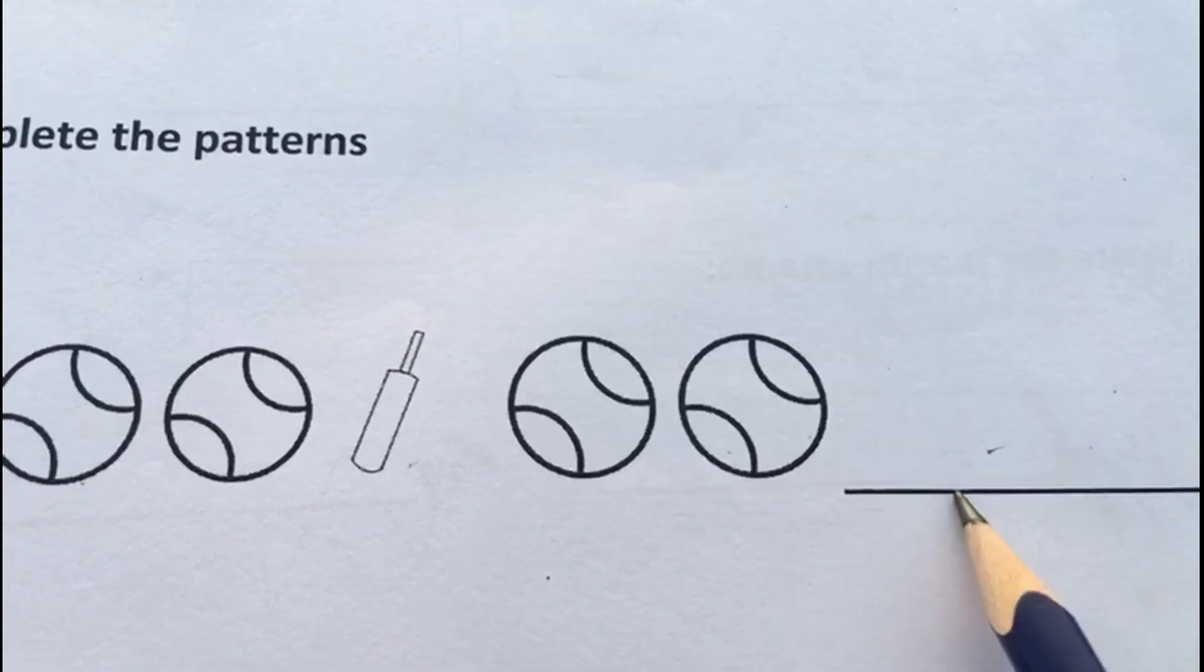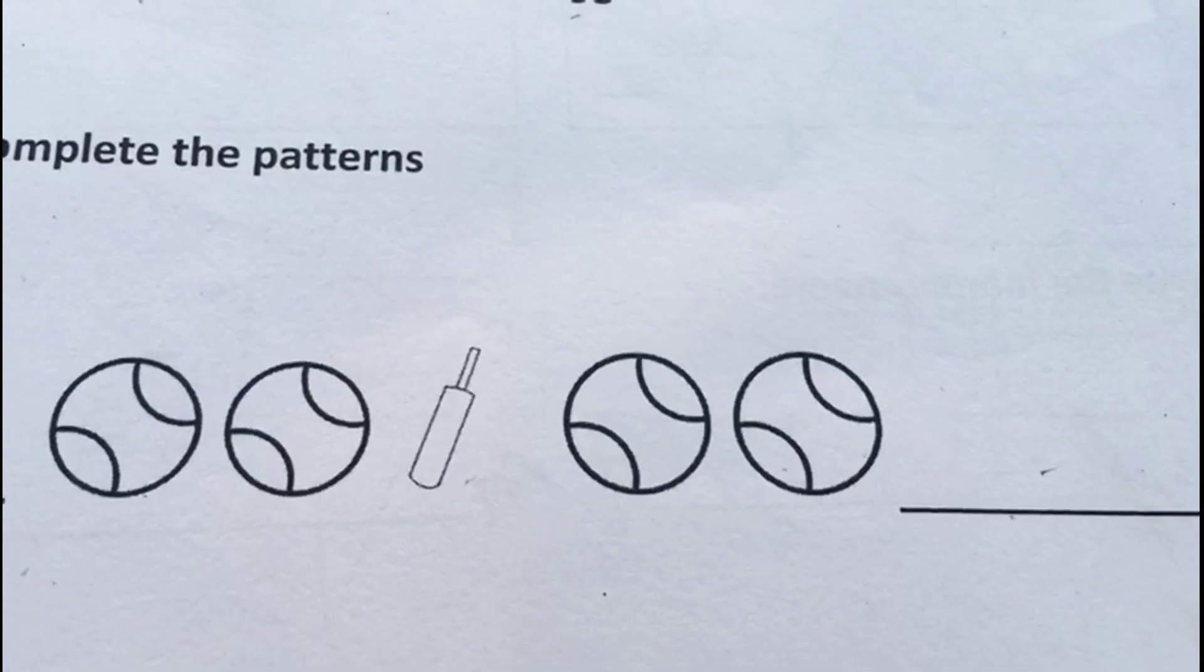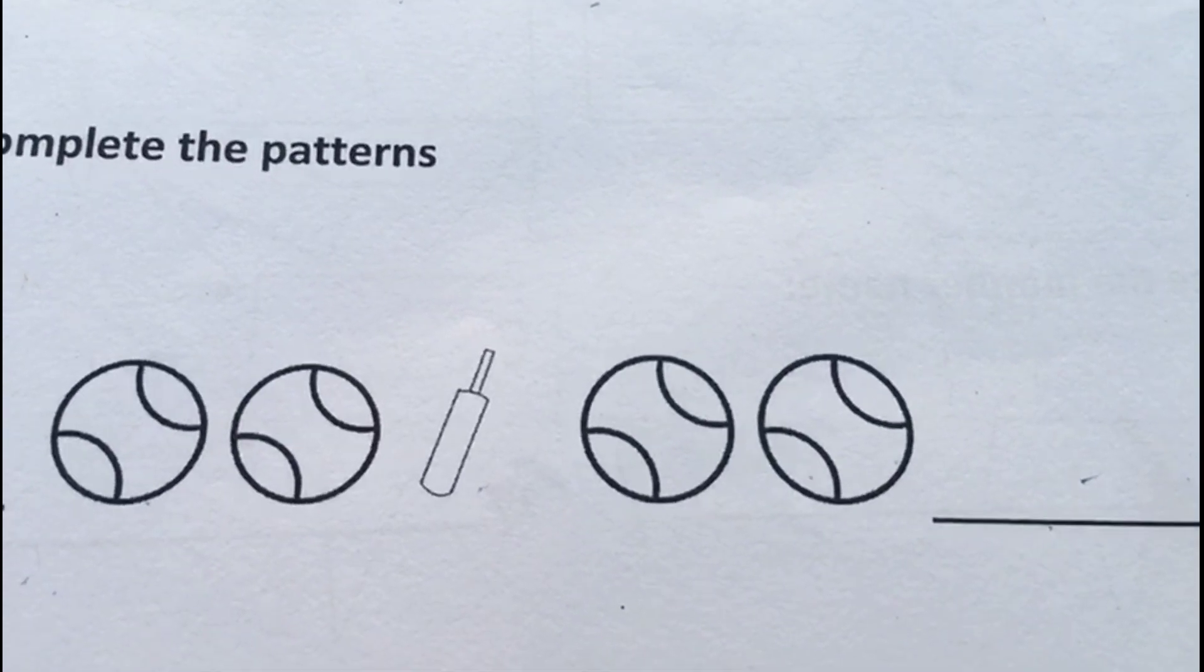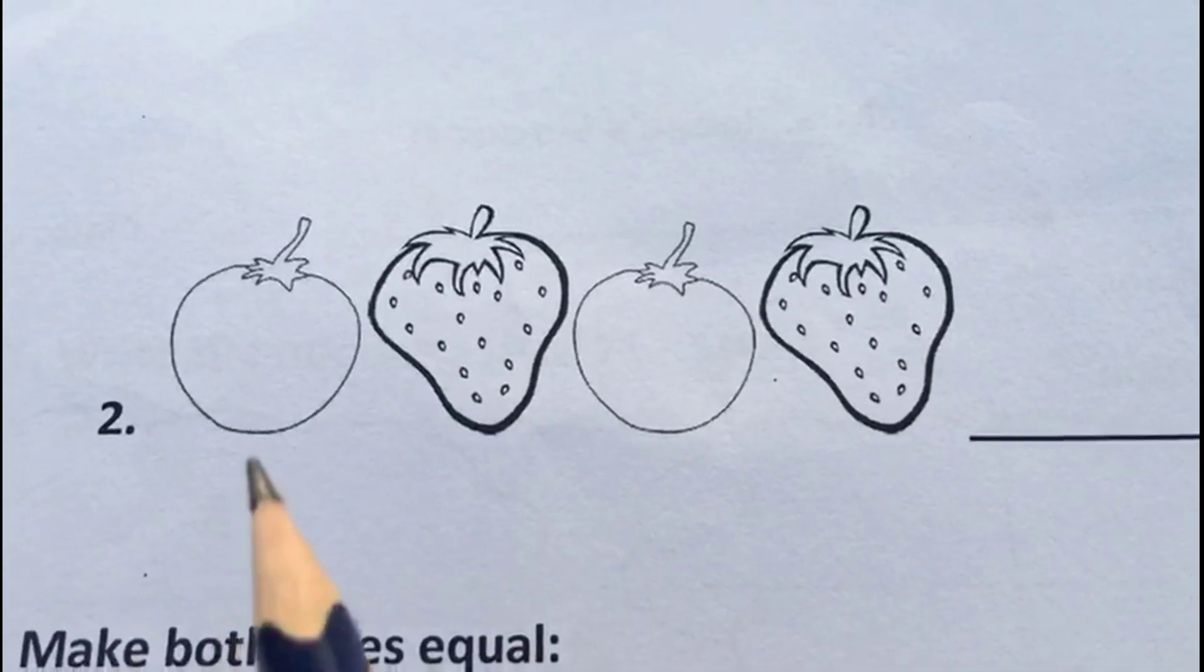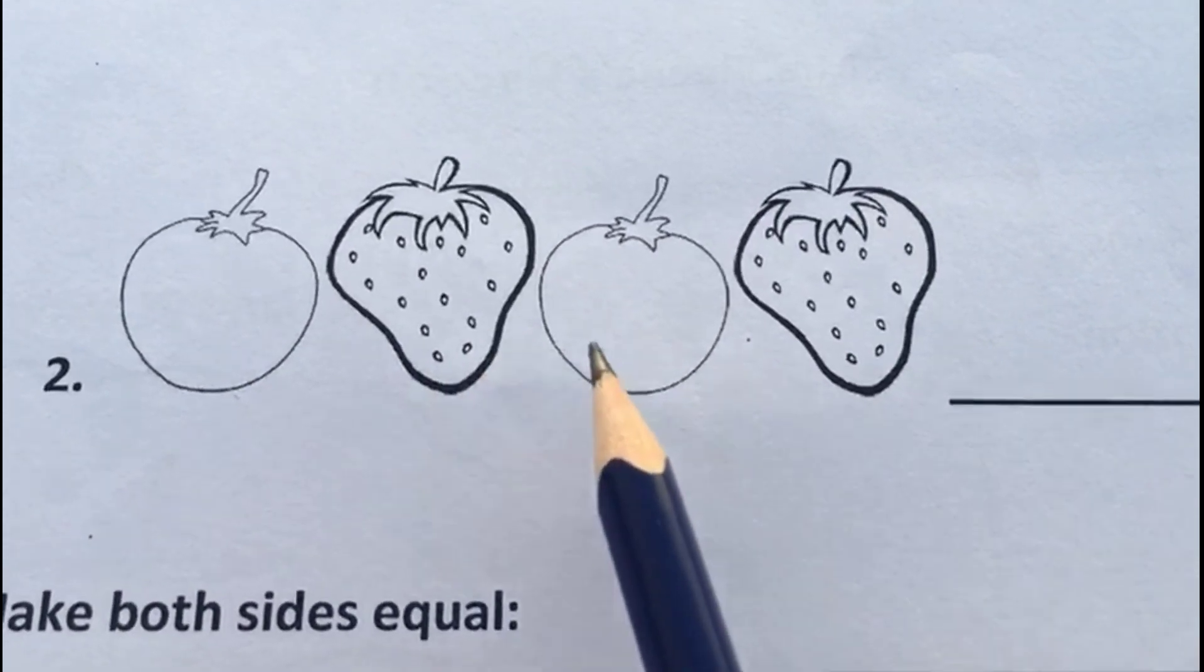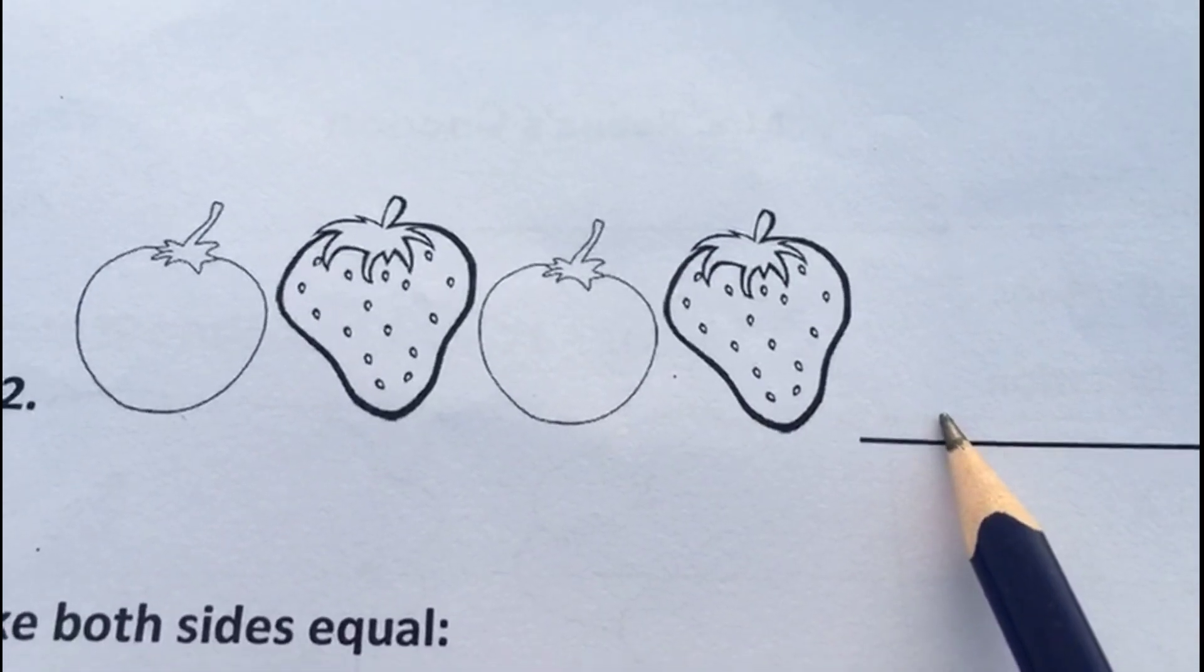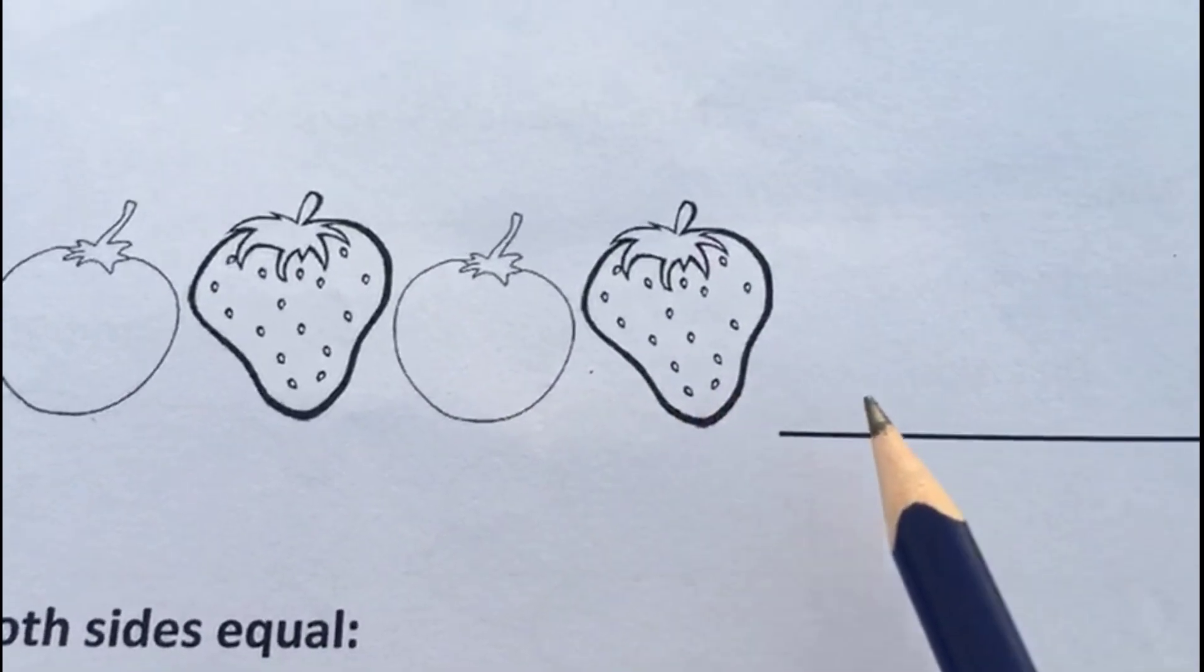This is the second pattern. Here we have a tomato, strawberry, tomato, and a strawberry. Now what comes after that? Yes, it is a tomato, right? So ask your child to draw a tomato and complete the pattern.